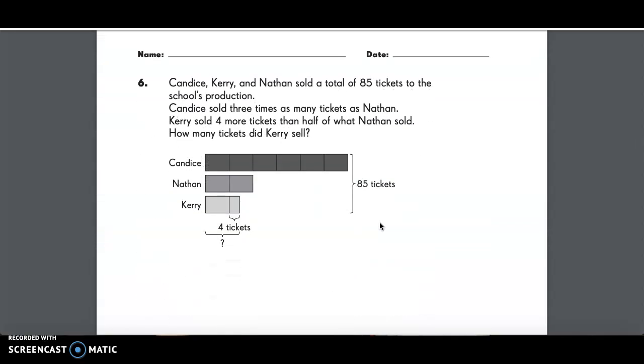Number six, Candace, Carrie, and Nathan sold a total of 85 tickets to the school's production. Candace sold three times as many as Nathan. Carrie sold four more tickets than half of what Nathan sold. How many tickets did Carrie sell?